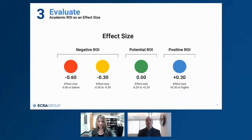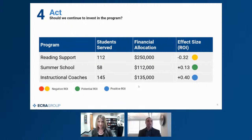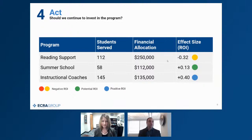A framework like this allows you to change the way you do business — evaluate every program every year. You could list every single one of your programs with the number of students you're serving, the financial allocations you're making, and right alongside it the effect size — the academic return on investment of those programs. Think about how this would change the conversation every time there's a new school improvement effort, a new intervention, or a new program, and you report on it every year so that when budgeting decisions come, you have a richer set of information to dialogue around.